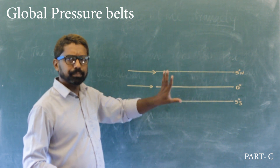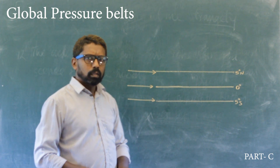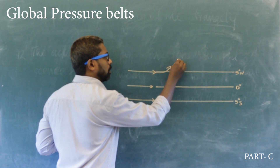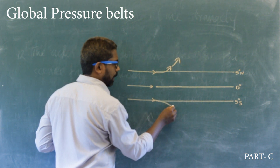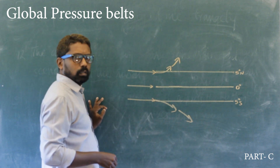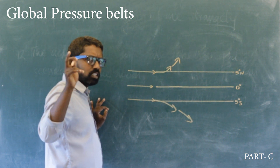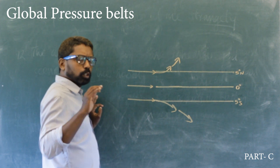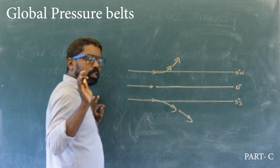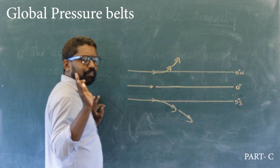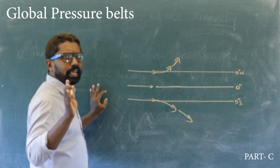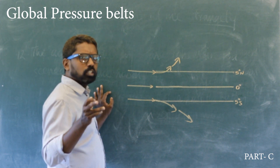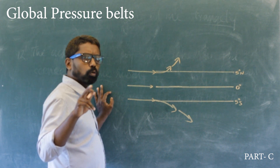Equatorial low-pressure belt. The heated air expands due to sun's heat and rises up on a massive scale. This is the reason for the low pressure experienced throughout this zone.